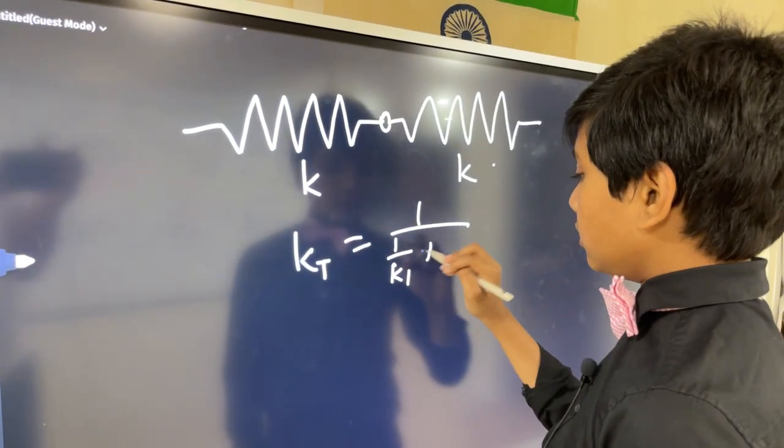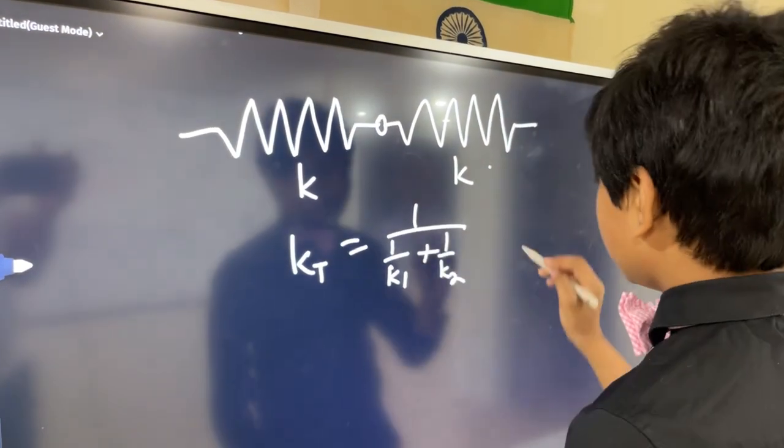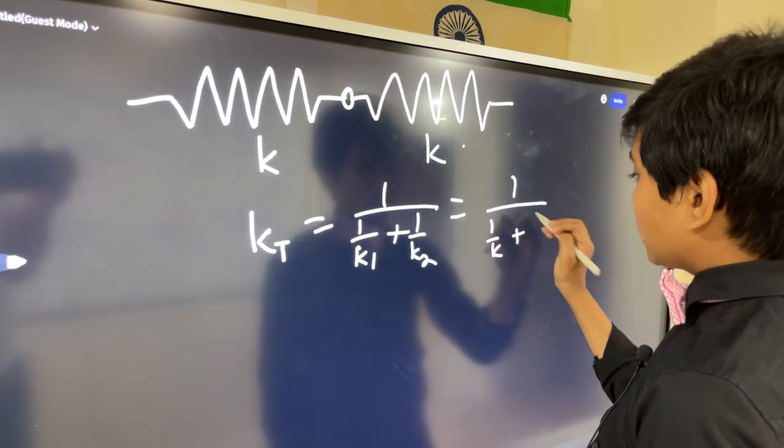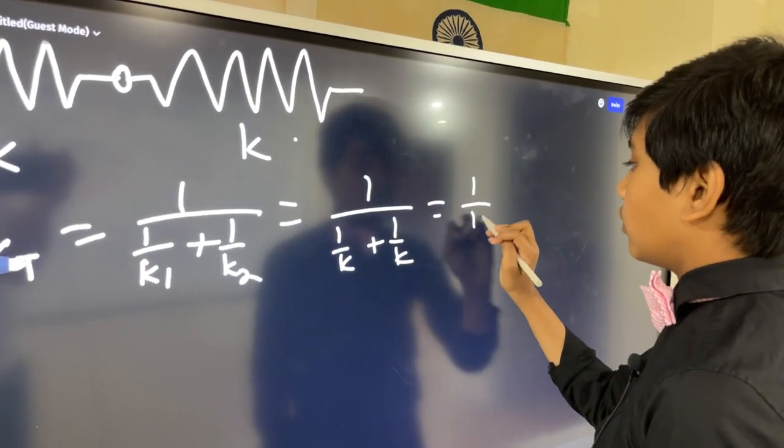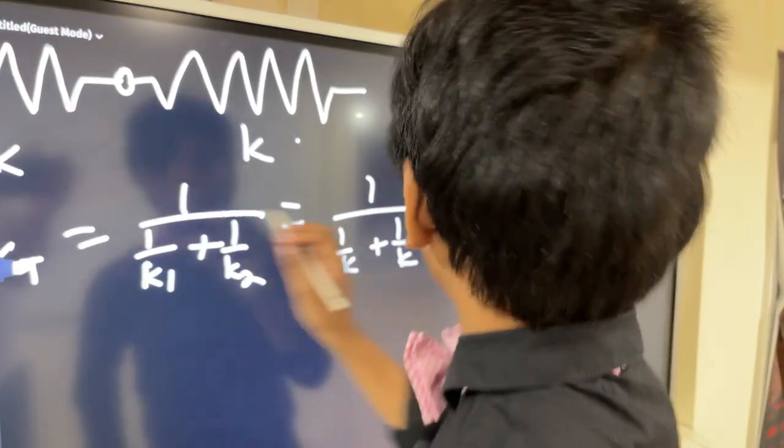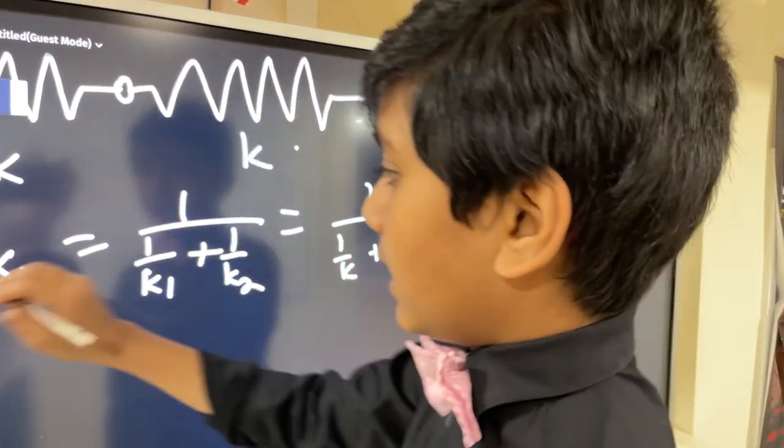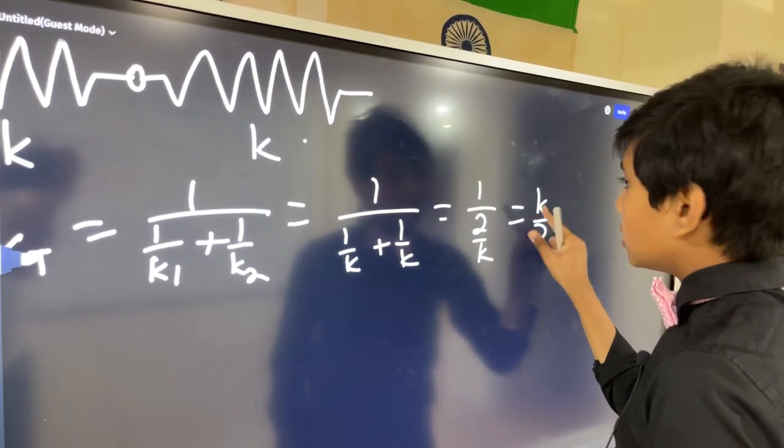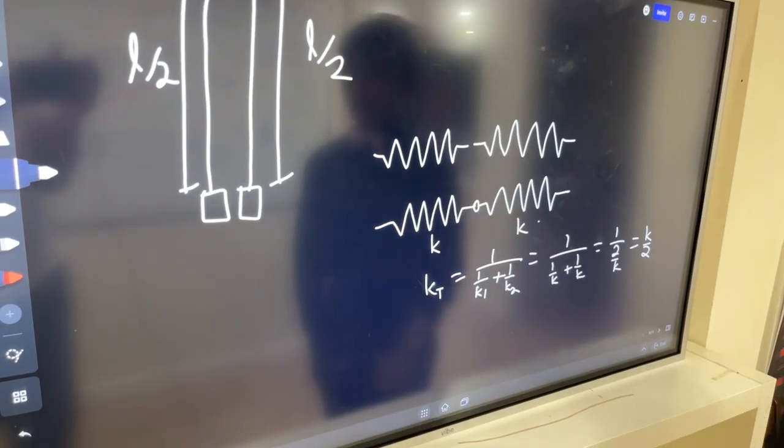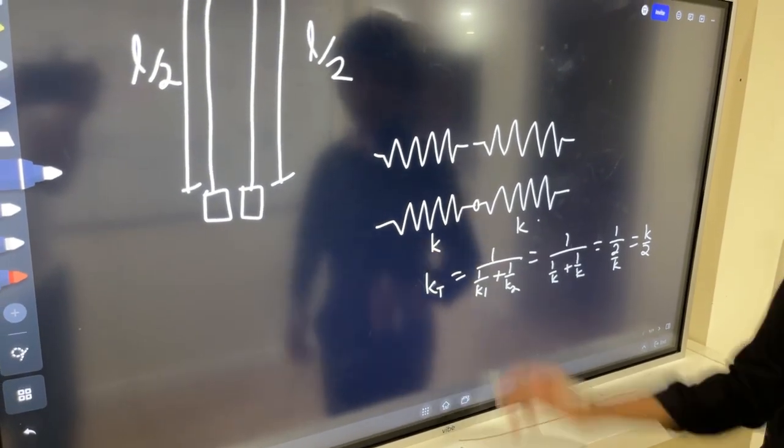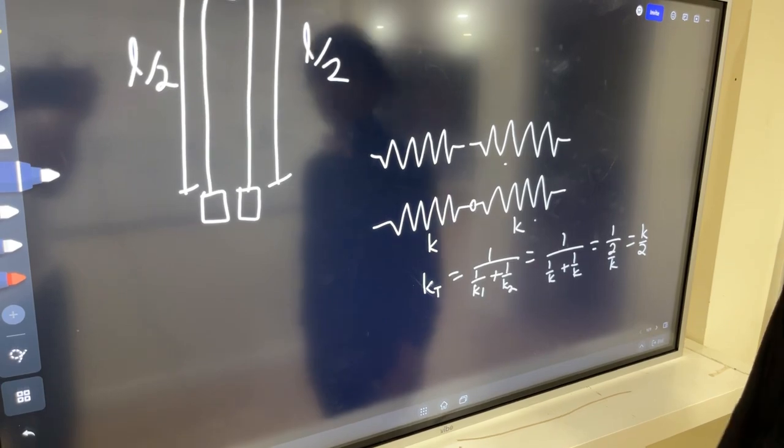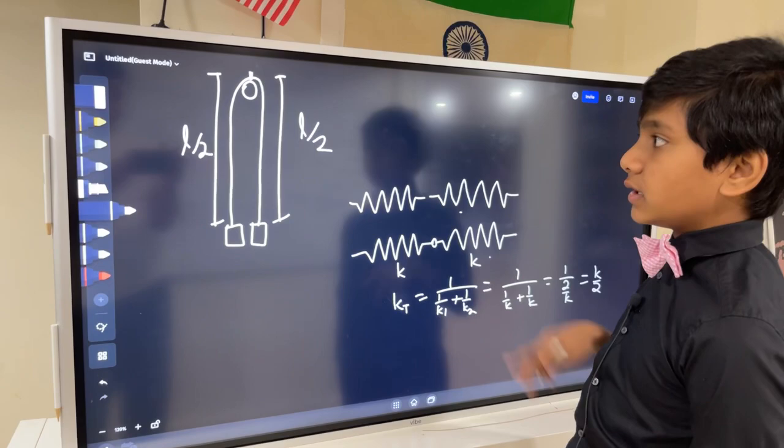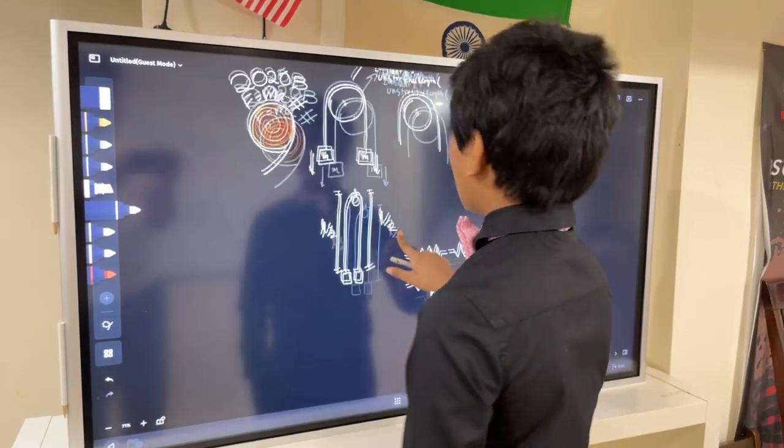One over K one plus one over K two and all of that reciprocated. So it's one over one over K plus one over K which is one over K over two, not K over two but two over K which eventually becomes K over two. So that means that the total spring has half the spring constant of each individual spring, or in other words each individual spring has twice the spring constant of the whole spring.